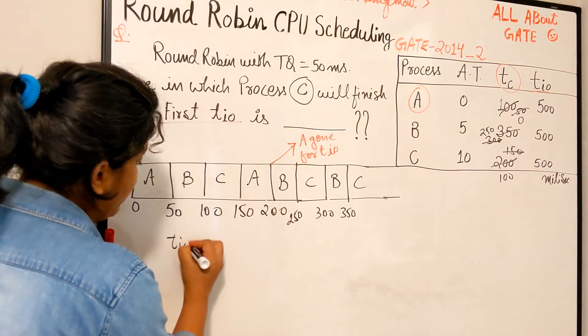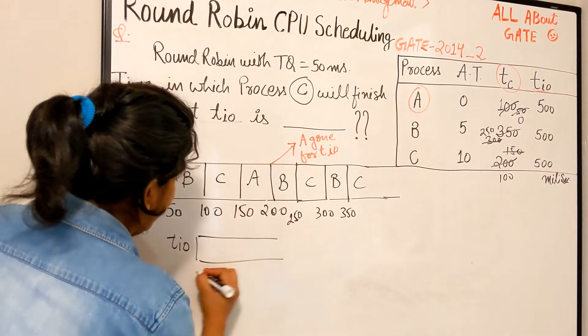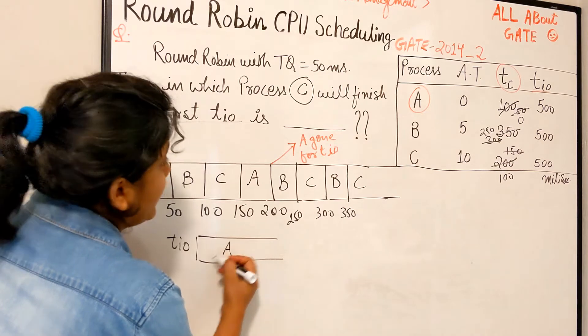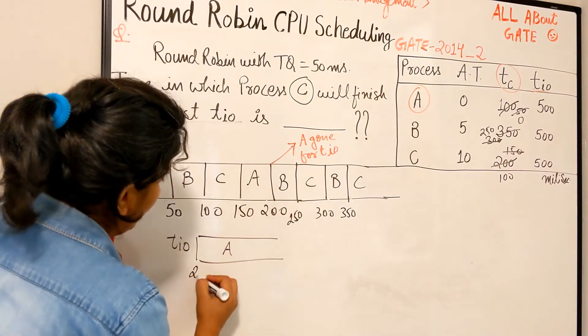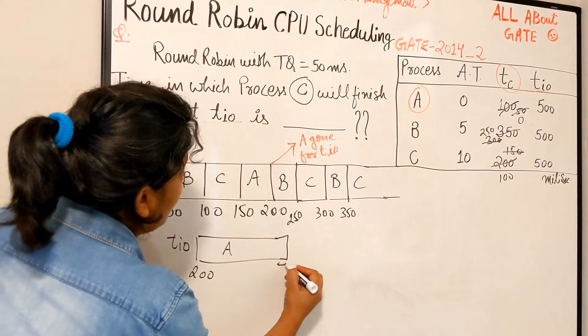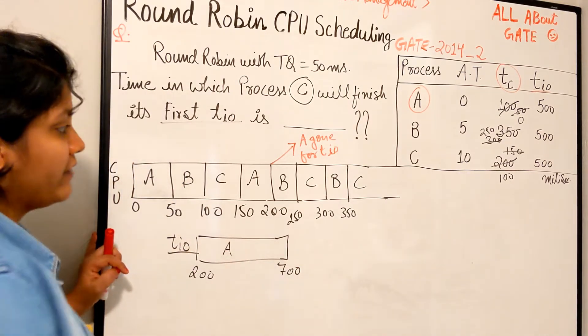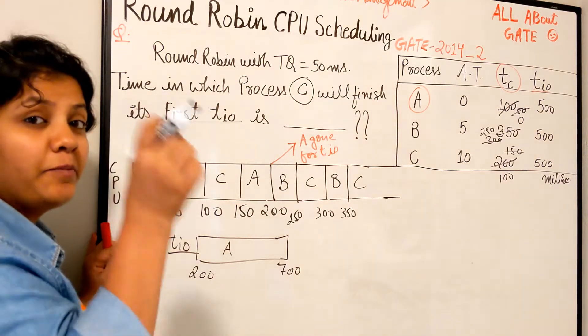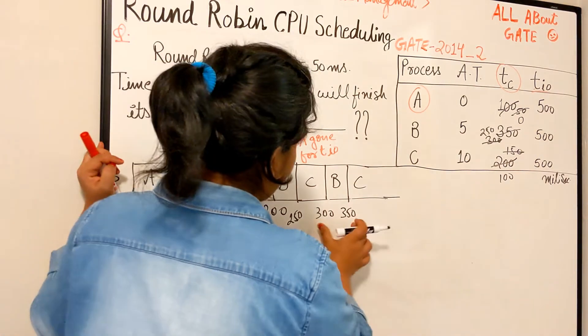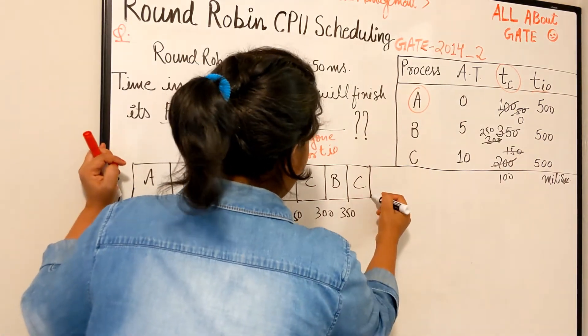Here is your A. It started at 200, so from 200 up to 700, it will be performing its IO operation. That's why it's not coming up on your CPU chart, right? Now C again, 400, right?